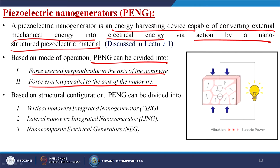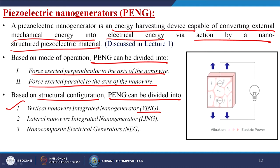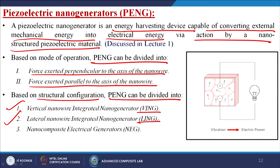Based on structural configurations, PENG can be divided into three parts: the vertical nanowire integrated nanogenerator (VING), the lateral nanowire integrated nanogenerator (LING), and the nanocomposite electrical generator (NEG). There are two types based on mode of operation: force exerted perpendicular to the axis of the nanowire, and force exerted parallel to the axis of the nanowire.